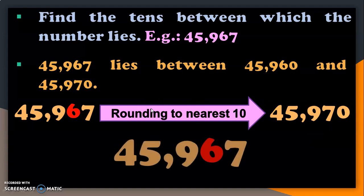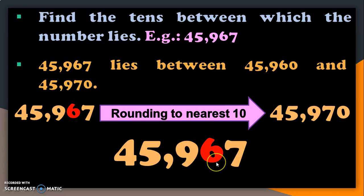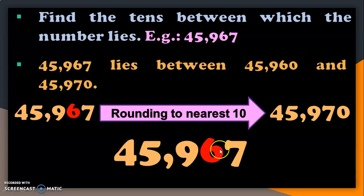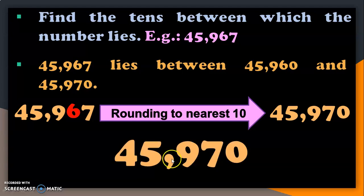Using the shortcut method: in the tens place we have 6 as the target digit. The digit after the tens digit is made 0, and since the value is above 5, we add 1 to the target digit. So the answer is 45,970.